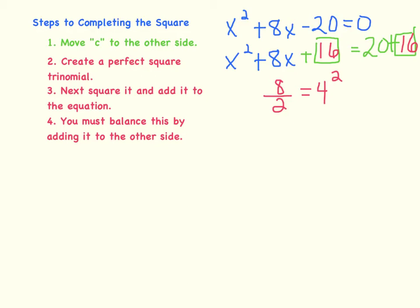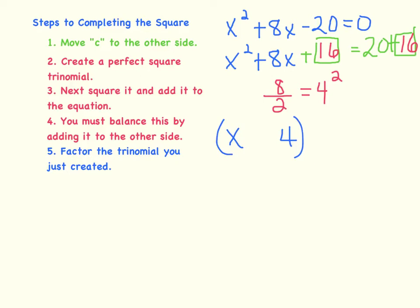So now we are ready to factor the trinomial that we just created. We do this by taking the square root of the first term — the square root of x squared is x — and then we take the square root of 16, which would be 4. We use the plus sign because that was in the original binomial. So we have factored: x plus 4 squared is the factored form of x squared plus 8x plus 16. Now we have to remember that this is equal to 20 plus 16.